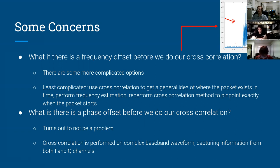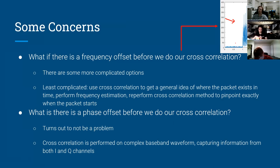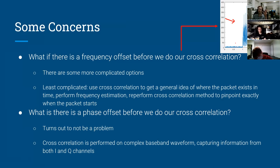What about a phase offset in addition to the frequency offset? It turns out this is not actually a problem. A phase offset means your constellation points are rotated, so some signal leaks into the Q channel instead of staying in the I channel. But when you do the cross-correlation with the complex baseband signal — combining both I and Q — those three peaks still pop out without any problem.